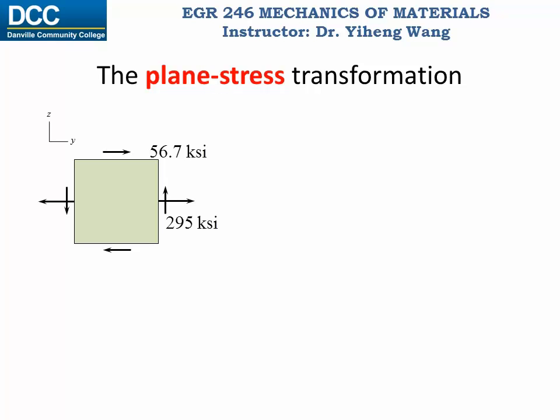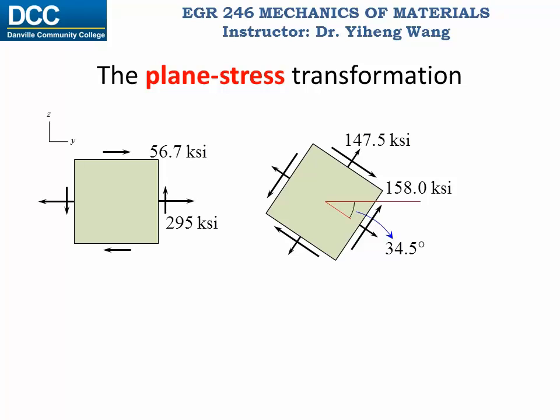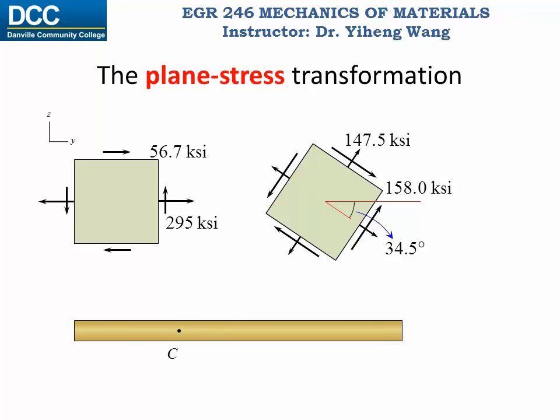On the other hand, for this same particle at a different orientation, it will have the maximum in-plane shear stress of 158 ksi. If point C happens to be the weakest point in this member and the material is ductile, meaning it has a lower resistance to shear stress, then it is likely the material will fail along this plane according to this orientation.